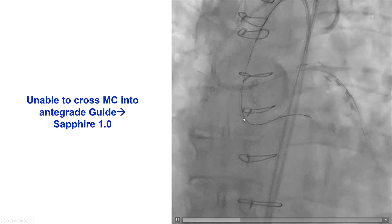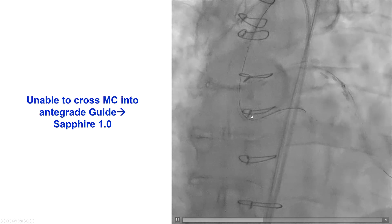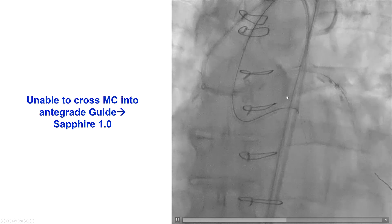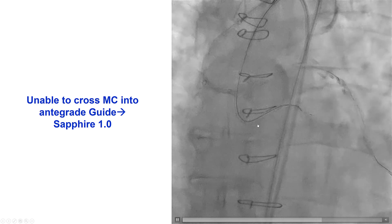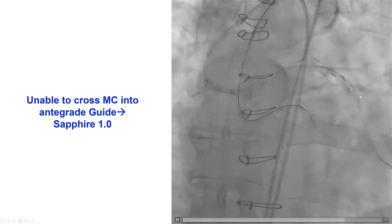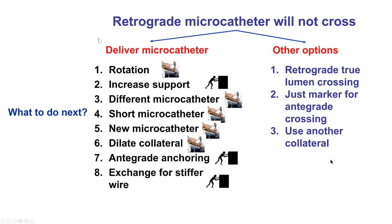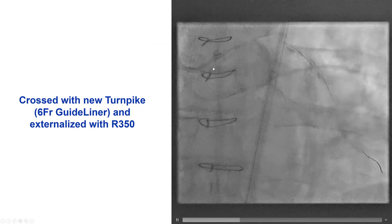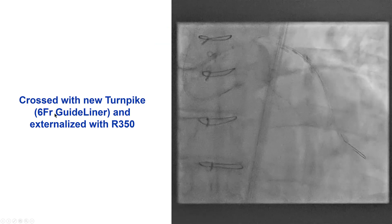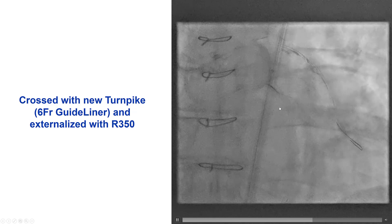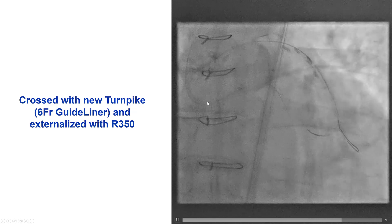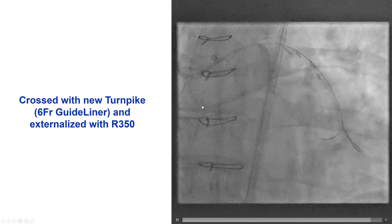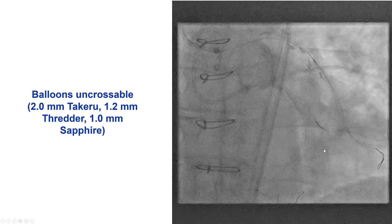We went back and did an attempt to cross retrograde using a Gaia Second guide wire, and this time the wire actually successfully crossed into the proximal true lumen and into the antegrade guide catheter. We performed anchoring of the retrograde guide wire, but then we could not get the retrograde microcatheter to come all the way into the antegrade guide catheter. We used a retrograde Sapphire balloon and then a new Turnpike microcatheter with extra support from a six French GuideLiner through the saphenous vein graft. We were able to advance it all the way into the antegrade guide catheter and then externalize an R350.